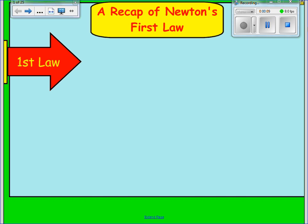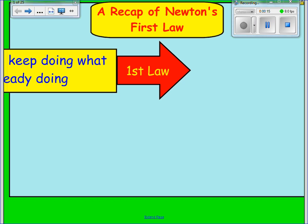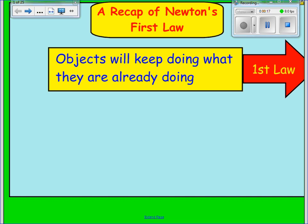Before we can move on, it's important to do a little recap of Newton's first law. Newton's first law stated that objects will keep doing what they are already doing. The more complicated definition: objects in motion will stay in motion, and objects at rest will stay at rest, provided that the net force acting on the objects is equal to 0. We gave this definition a term back in Unit 4, and it was called equilibrium.